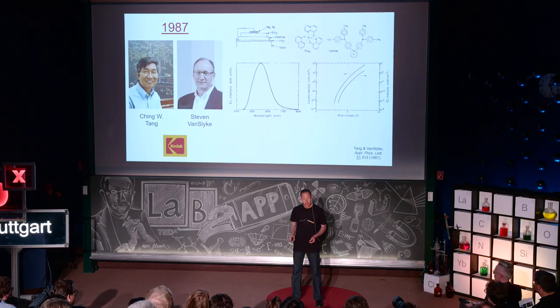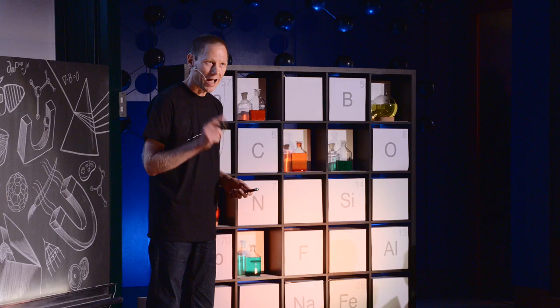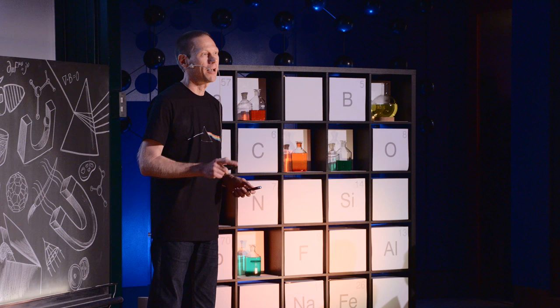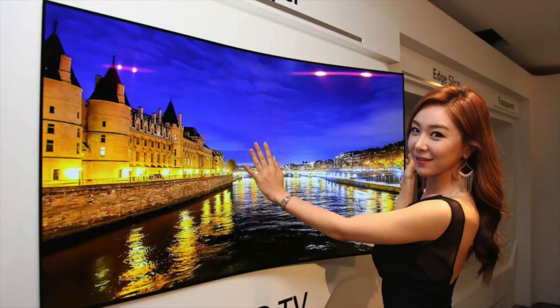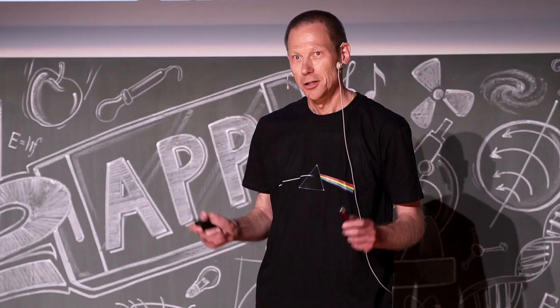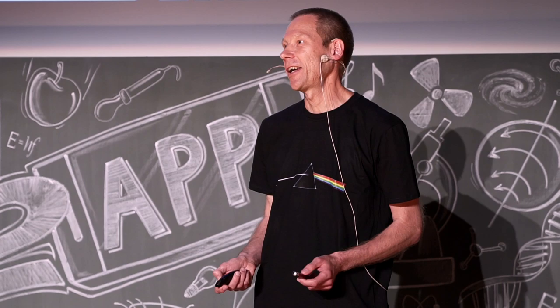In closing, I would like to return to the question I posed in the beginning. Could the inventors of the organic light emitting diode — Ching Tang and Steven Van Slyke — in 1987 possibly have imagined just how profoundly their invention would reshape the way we display and conceive visual information? If you ask me, I will say no. Inconceivable.